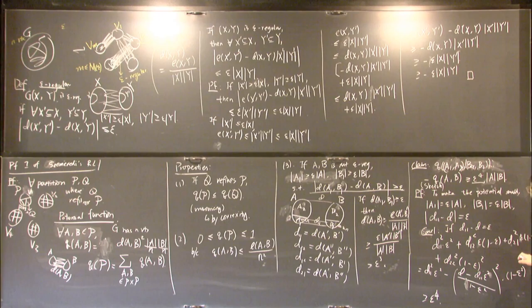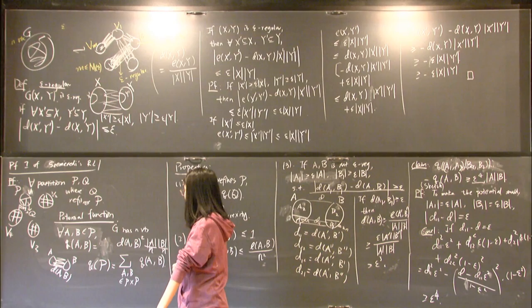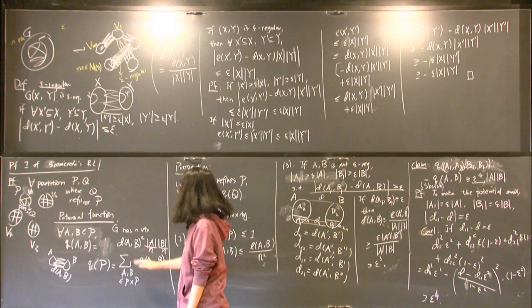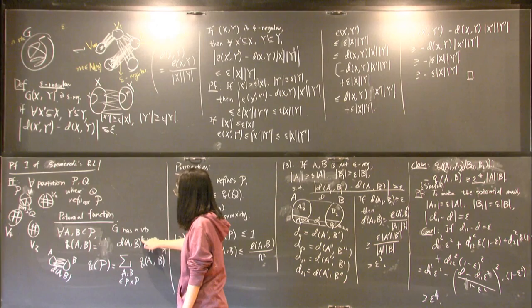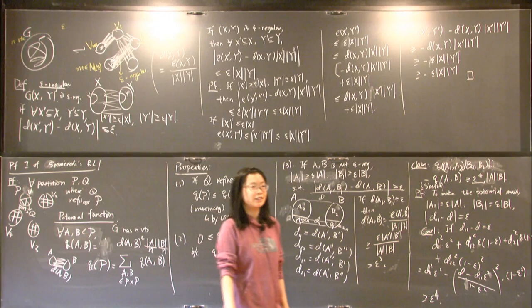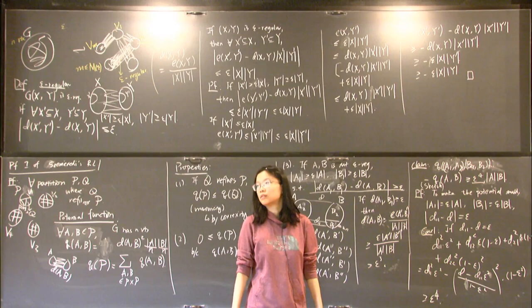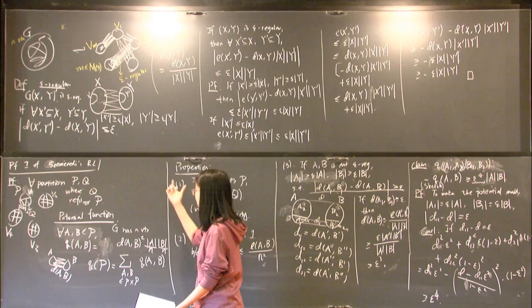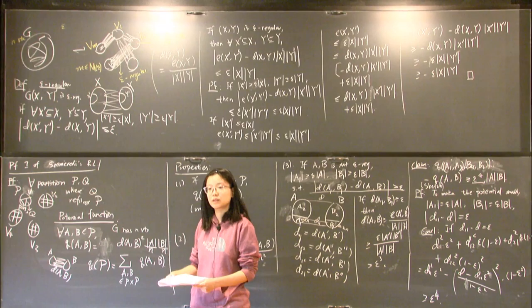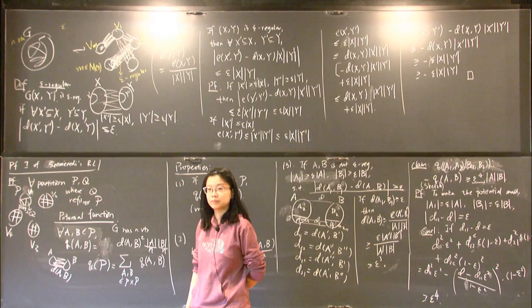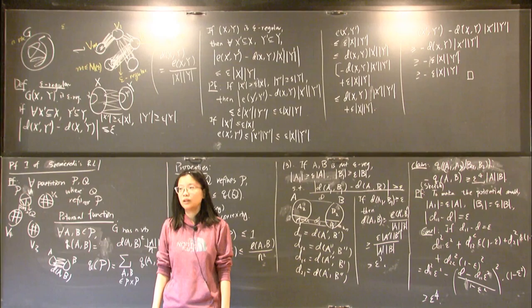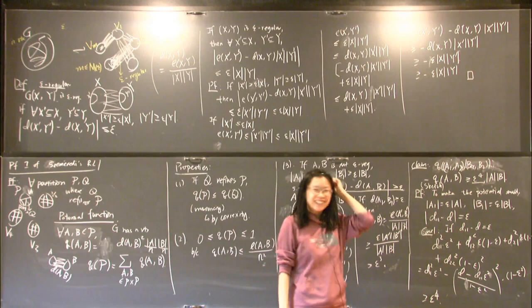There's a question about whether using exponent 2 in the potential function is optimal, or whether some other value gives a smaller tower height. There is apparently a paper viewing this proof as mirror descent that examines the optimization. In any case, this type of proof appears in many applications and gives different variants of the regularity lemma, some of which can be made algorithmic.